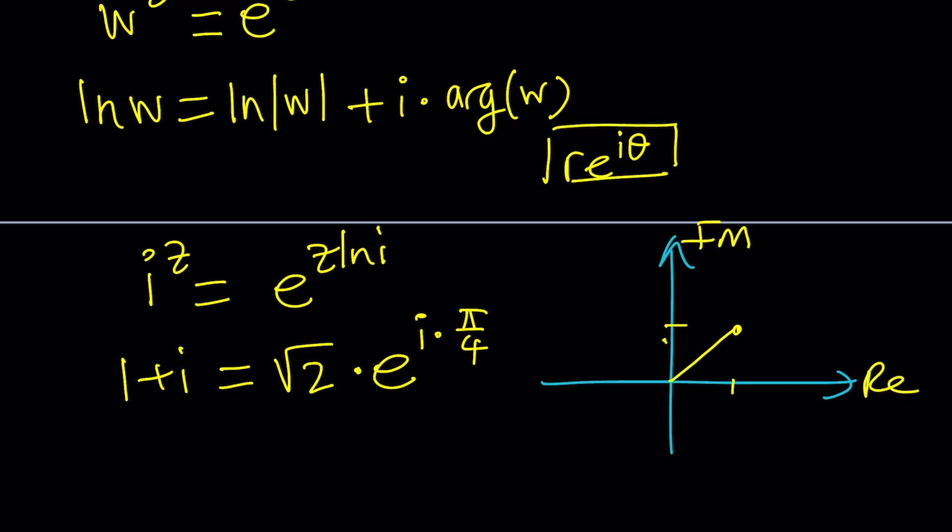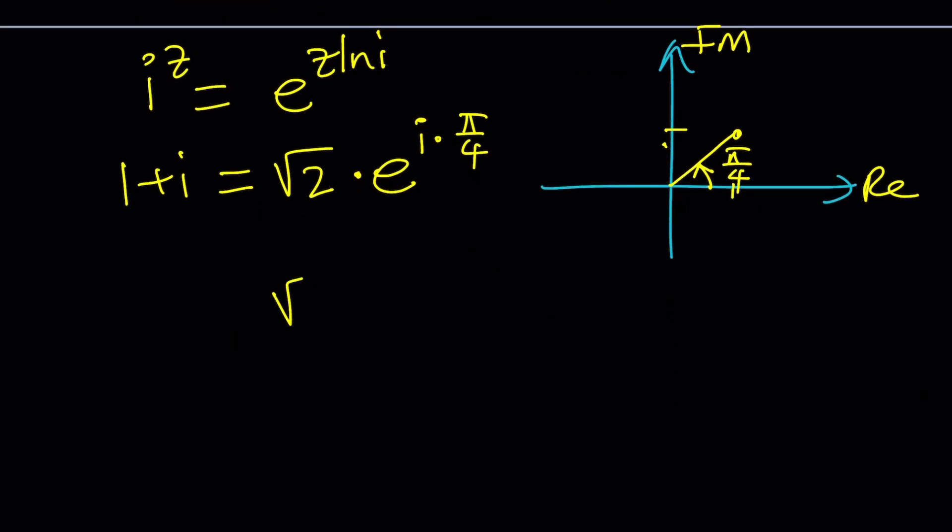But why is it only pi over 4? It's not only pi over 4, but that's going to be the principal argument. In other words, the smallest value. So we can go ahead and do the following. We can just write it this way, or we can definitely write it in a more general form, like i times pi over 4 plus 2 pi n. And adding multiples of 2 pi is basically going to bring you to the exact same point. Add 2 pi, subtract 2 pi, add 4 pi, so on and so forth. So this is what 1 plus i is equal to.